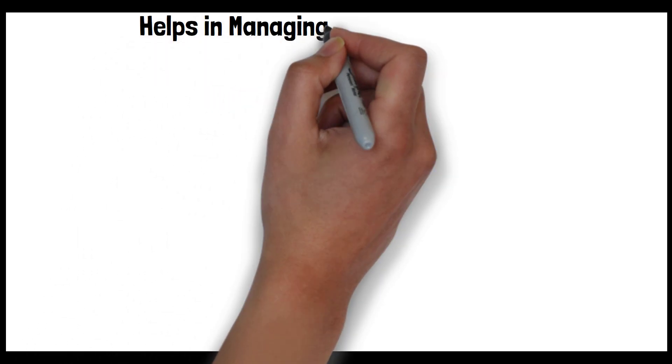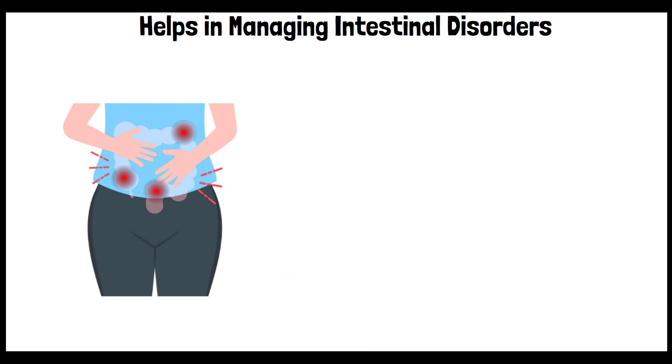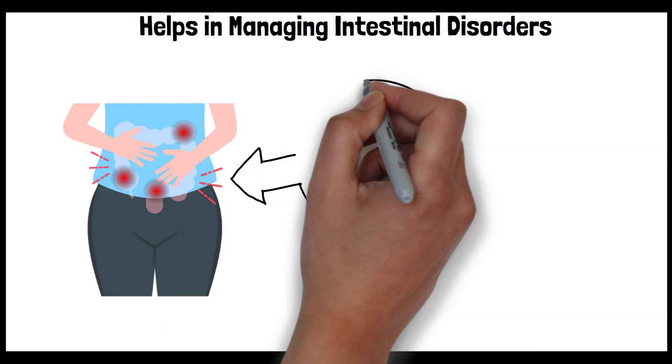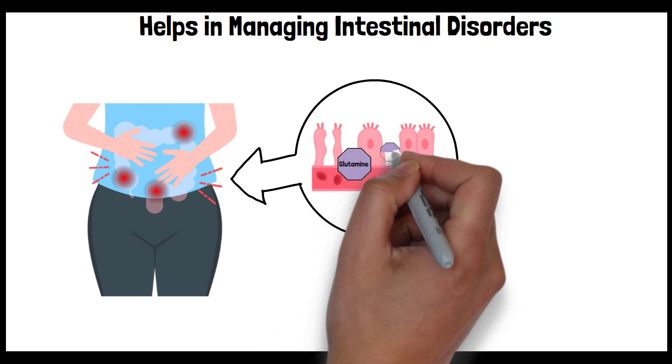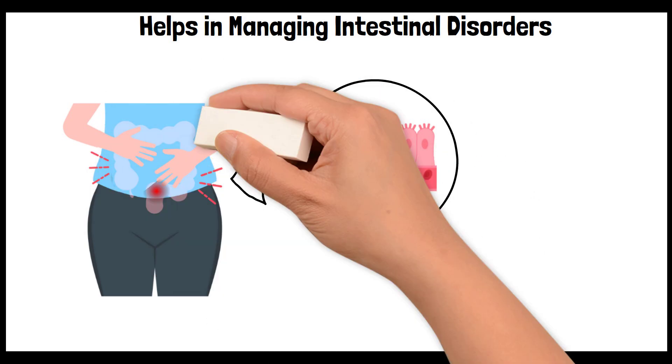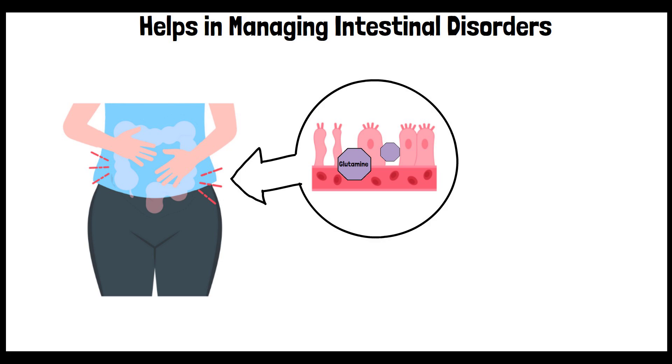Seven, helps in managing intestinal disorders. Disorders like leaky gut syndrome and Crohn's disease involve damage to the gut lining. Glutamine, by supporting gut barrier function and reducing inflammation, can play a role in managing and potentially alleviating the symptoms of these conditions.